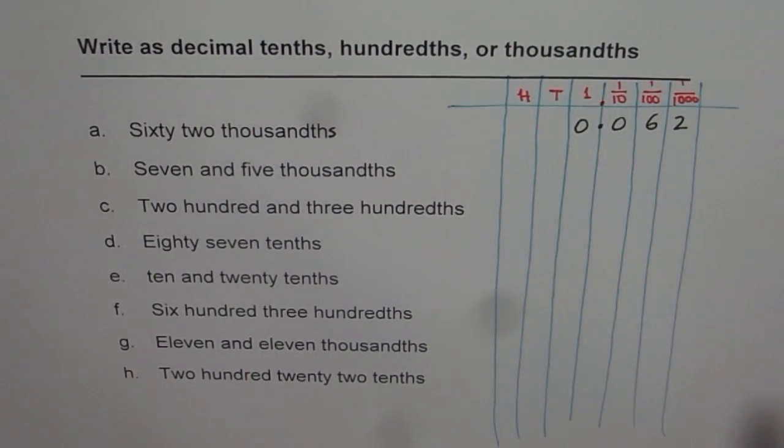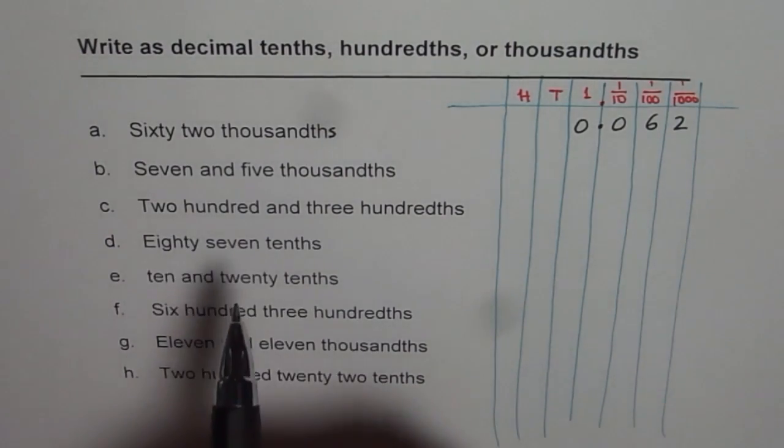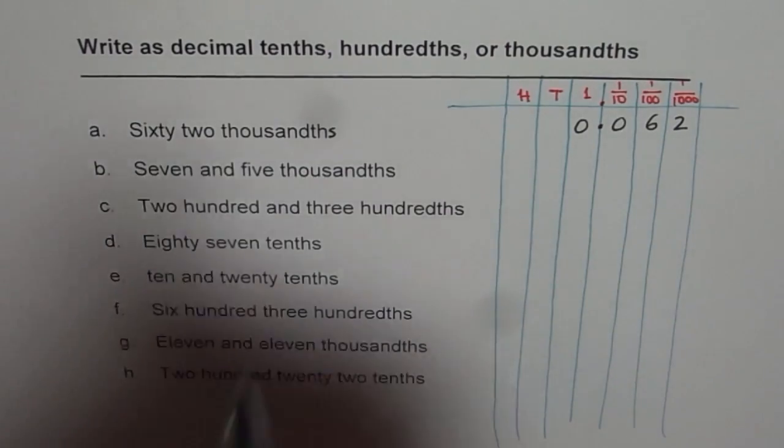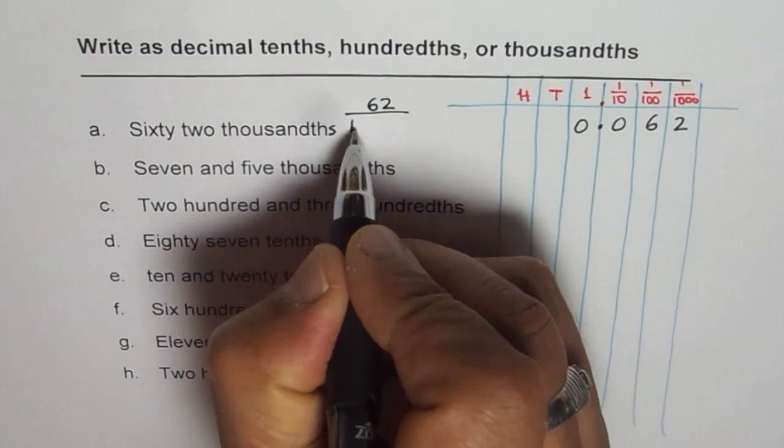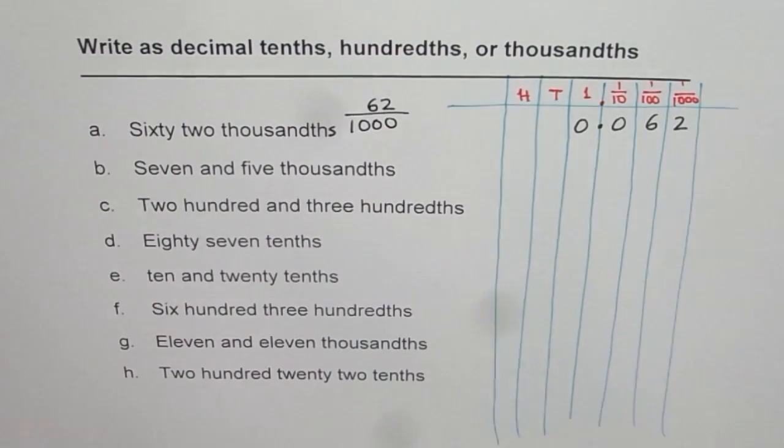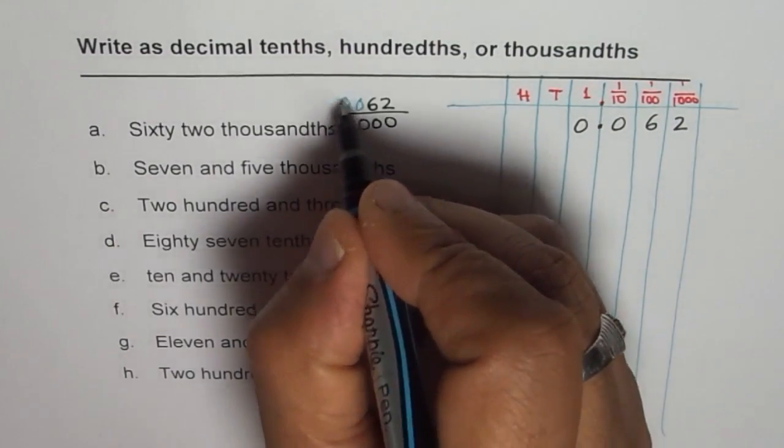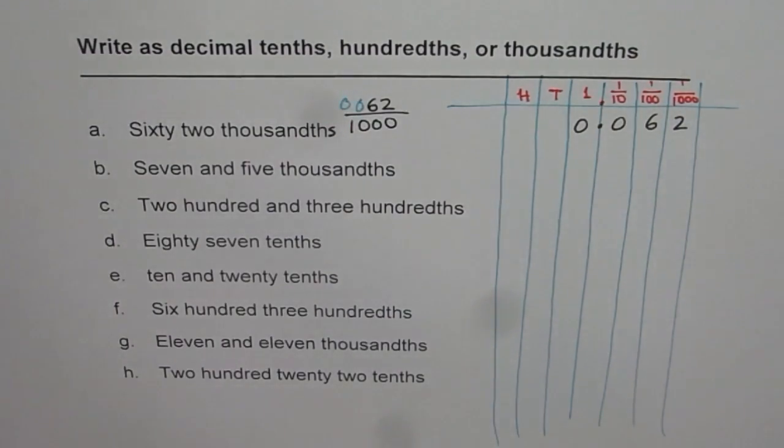Another technique which we learn is whenever you have a doubt you can use fractions. Sixty-two thousandths really means sixty-two divided by thousand. Now when you divide by thousand you have to move the decimal point three units left.